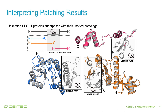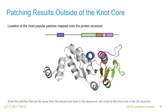One of our unexpected results was that all proteins from some families — here we can see the results for SPOUT — where they contained both knotted and unknotted proteins, the unknotted proteins were actually in fact fragments and not whole proteins. Here we can see a few of these examples superposed with their knotted homologs, and we can notice that the part of the sequence that contains the knot core in the homolog is missing in these fragments. Further analysis also shows that the patches that were far away from the knot core in the amino acid sequence were actually close to it in the 3D structure, so even for those that were not close, they might actually make some sense.